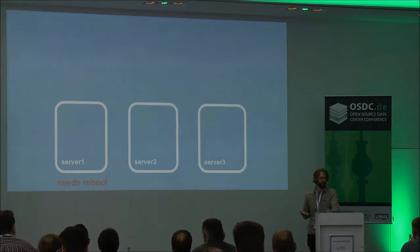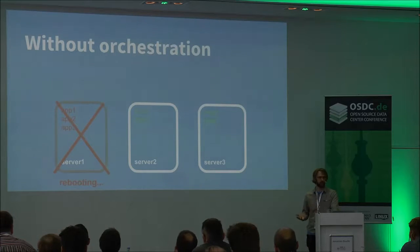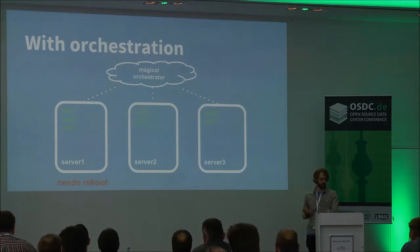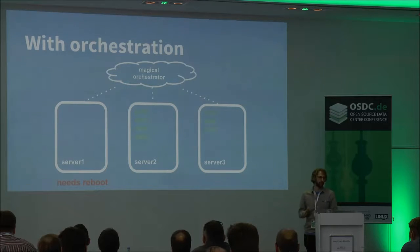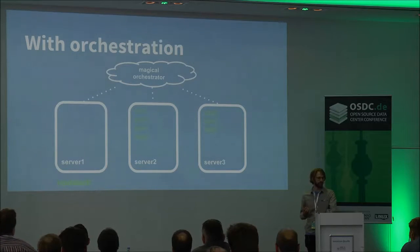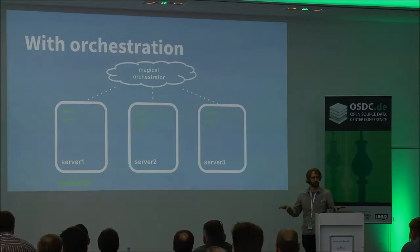The server needs a reboot but still has applications running on it, and ideally we want them to keep running. Without orchestration, when the server reboots we completely lose those applications while it's out of service. With orchestration, the orchestrator can react and shuffle apps to another server in the cluster. While server one is rebooting and applying the new update, there's no loss in service. Once the server comes back, the orchestrator can rebalance and distribute applications across the cluster.